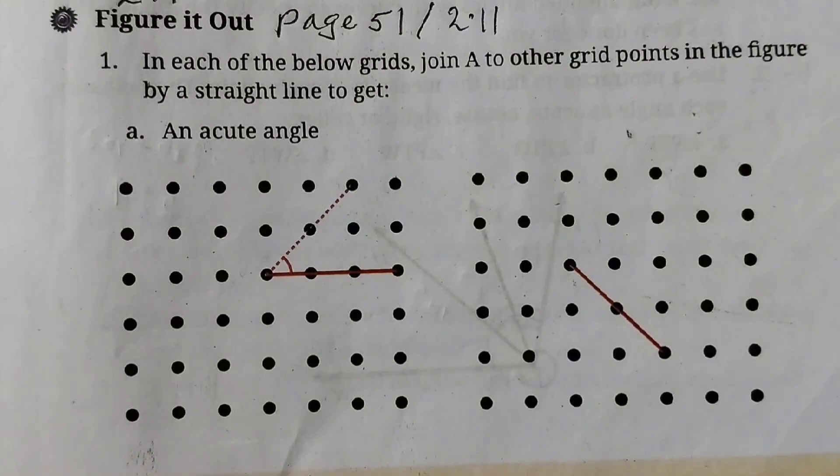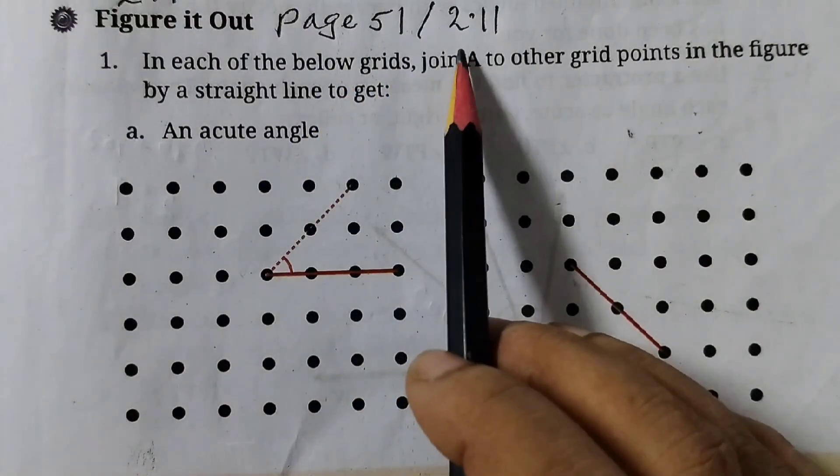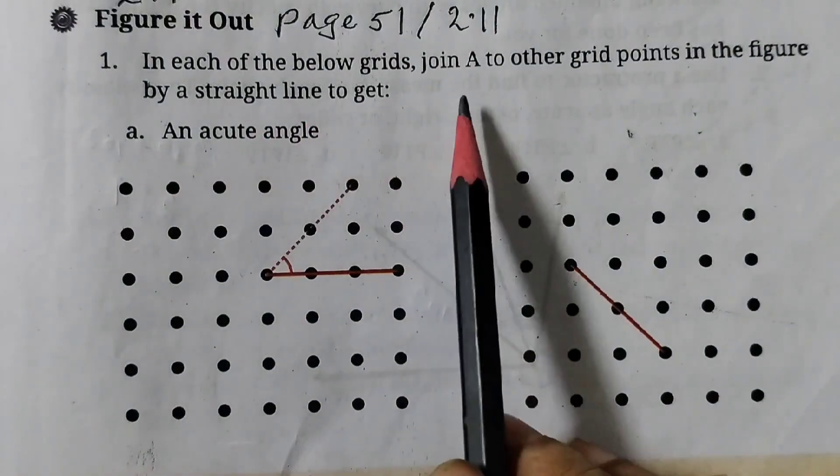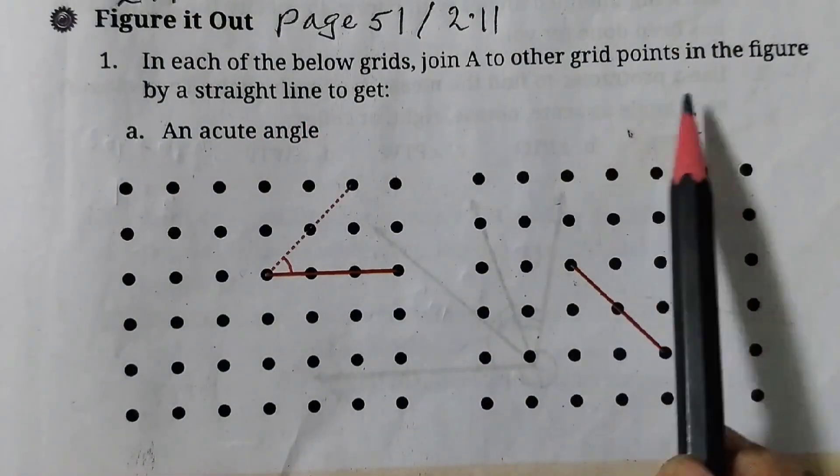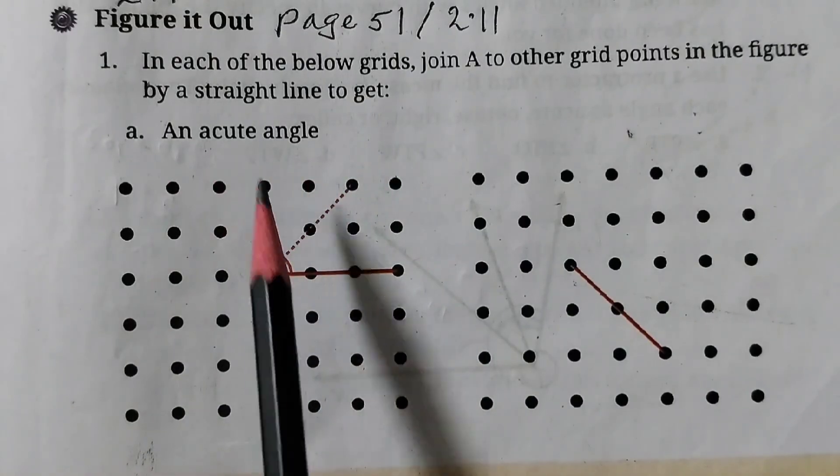Hello students, welcome back to Rosiematt's class. In this video we are going to do the figure it out questions given on page number 51, section 2.11, Chapter 2 lines and angles. In each of the below grids, join A to other grid points in the figure by a straight line to get an acute angle.